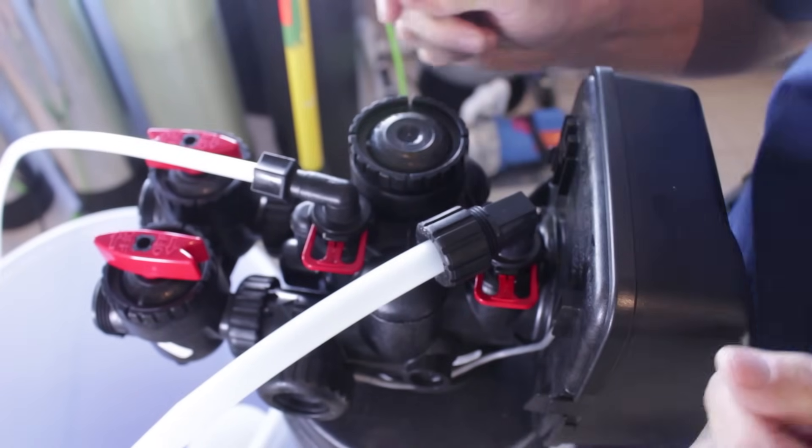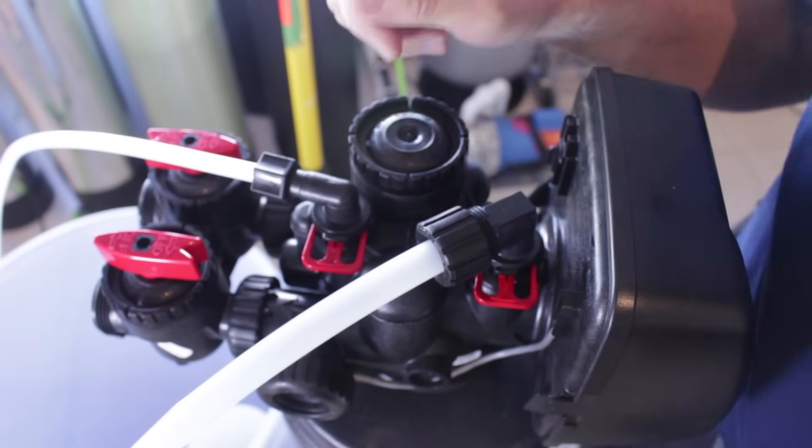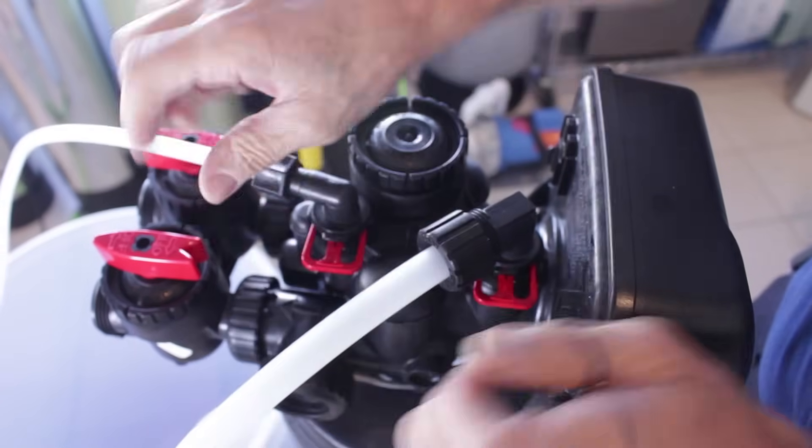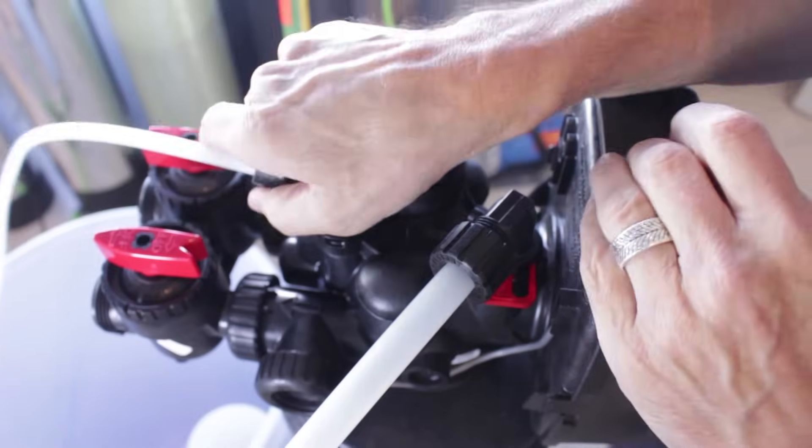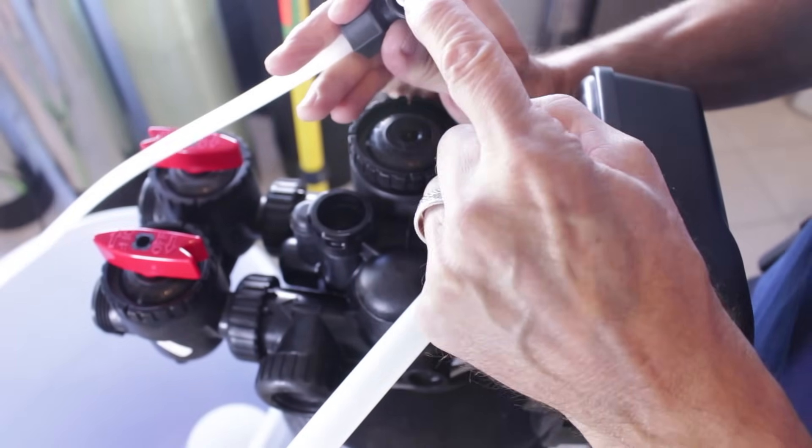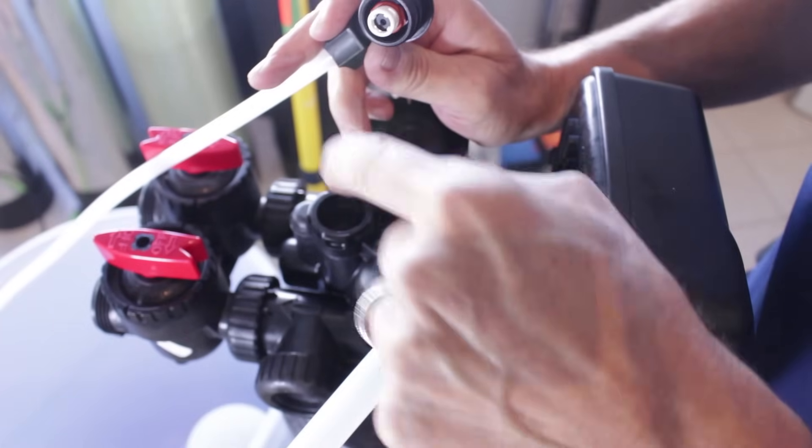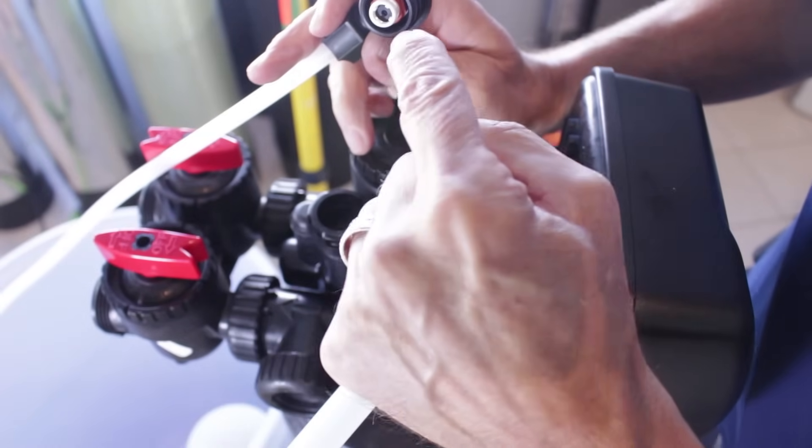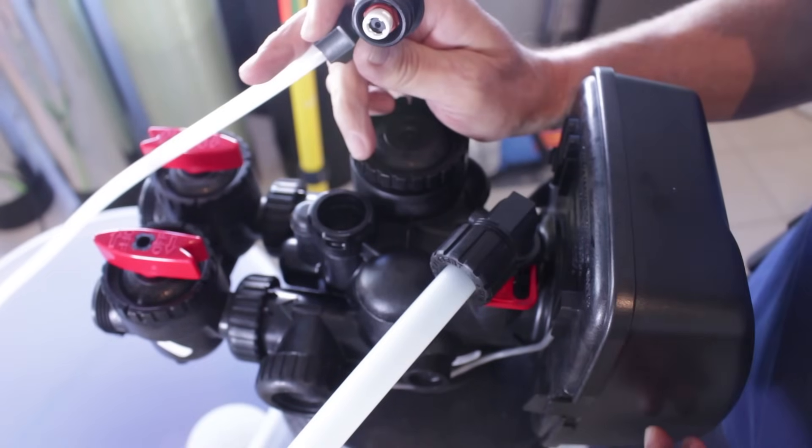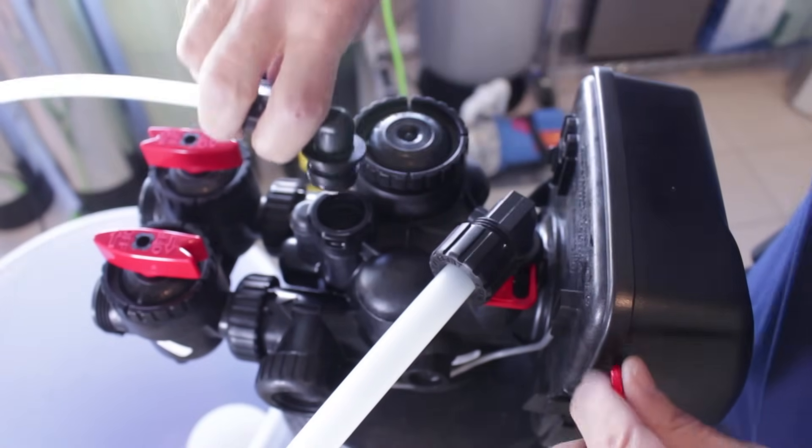The next thing to check is the brine line flow control. That's where the brine line connects to the water softener valve. Right here is the brine line flow control and again it's a very small button. I've seen these where debris inside the brine tank gets sucked up through here and it clogs that little button and then it won't draw brine anymore. Make sure you clean that out.